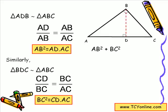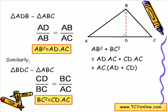We get AD × AC + CD × AC. Taking AC as a common factor, we get AC × (AD + CD). Now we know that AD + CD simply gives AC. So AC × AC gives us AC², which is what we require. This is the proof of the Pythagorean theorem: AB² + BC² = AC².